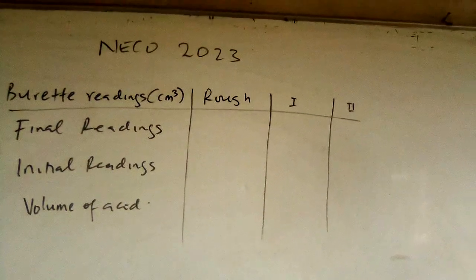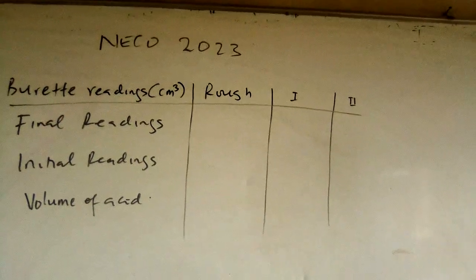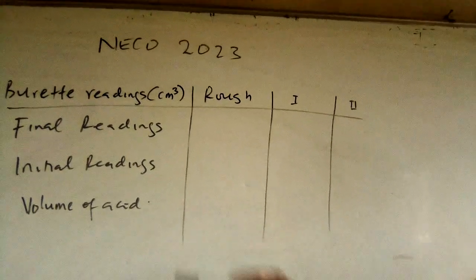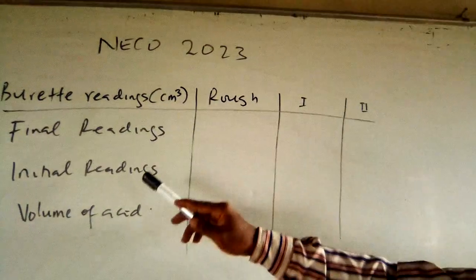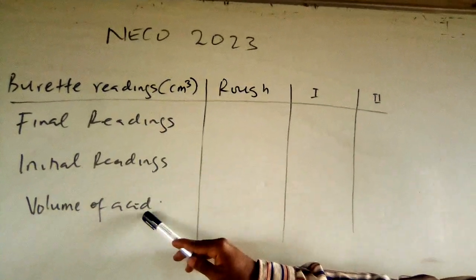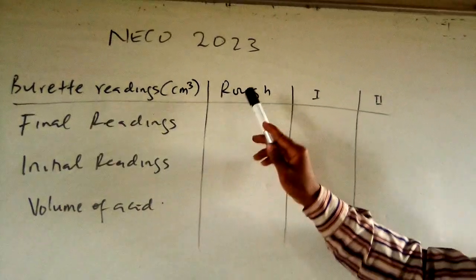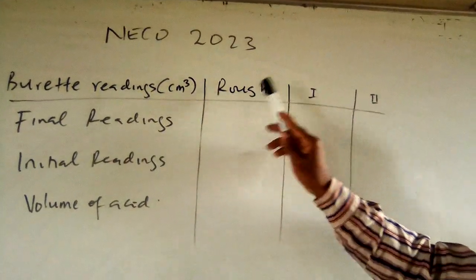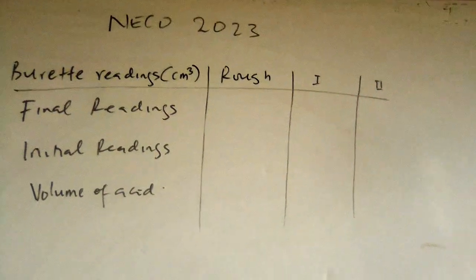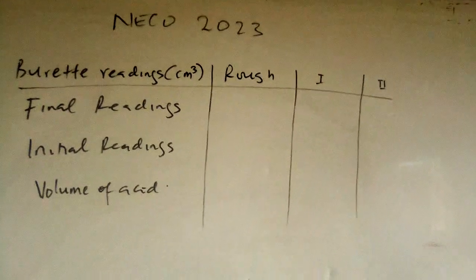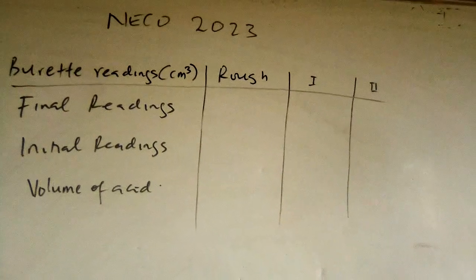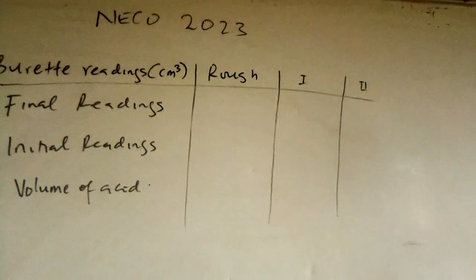On the table you have your burette readings: final reading, initial readings, and titre used — for the rough, first, and second titrations. This is the standard table for recording titration results. Let's go to the question.